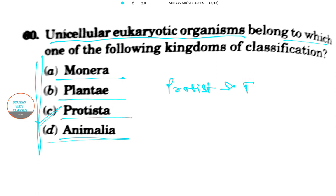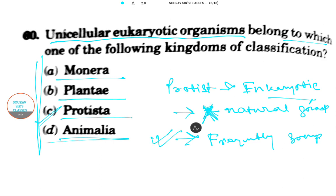Protists are any eukaryotic organisms that do not form any natural group, but they frequently form groups for convenience.